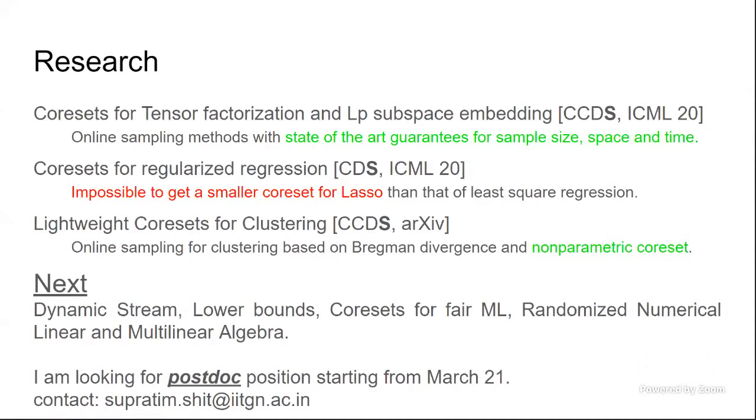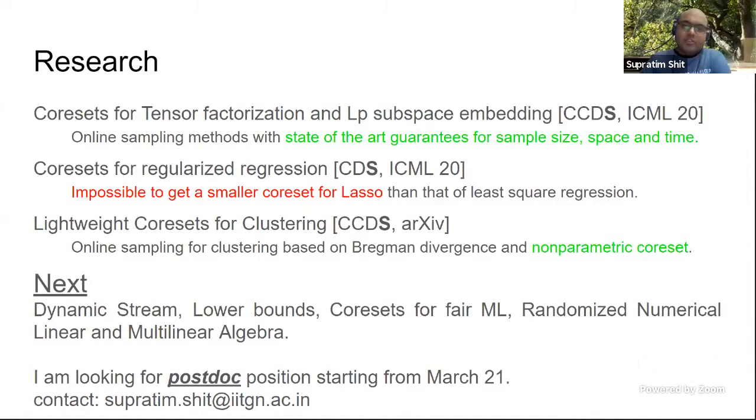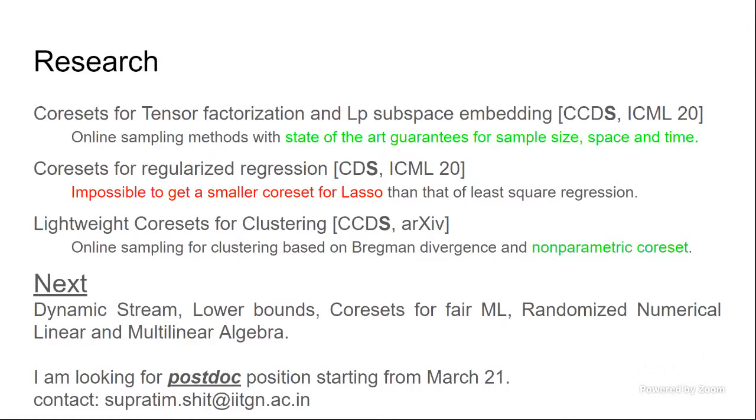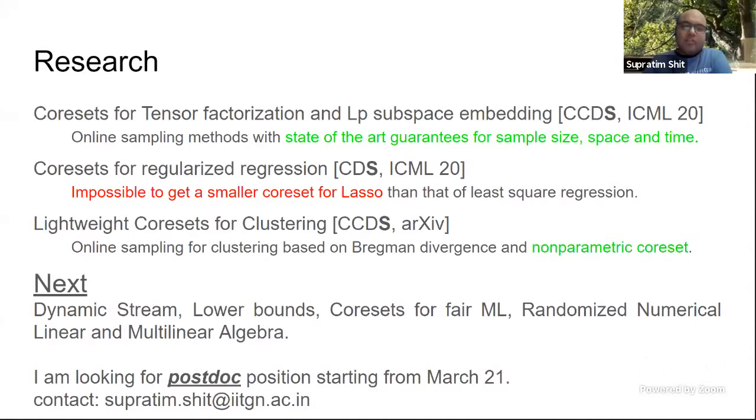In case of a clustering problem, we have shown online algorithms to create core sets for clustering based on Bregman divergences. For the same problem, we also give core sets which is non-parametric in nature, as in the size of the core set is independent of the dimension of your input point, as well as k, the number of clusters you are expecting in the data. So in here, our algorithms are online in the nature, because for every incoming point, our sampling decisions are taken without looking at the next input point. So yeah, and these are a couple, I mean, I have to stop after two minutes for each.